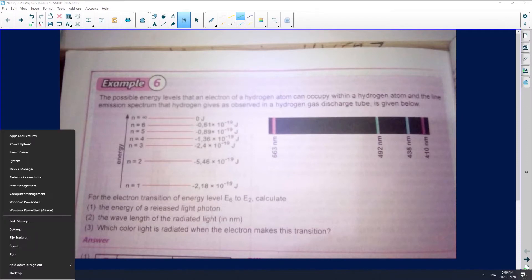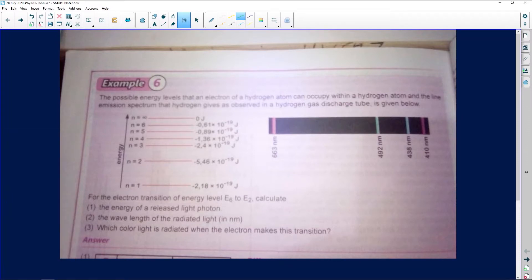The question says: the possible energy levels that an electron of a hydrogen atom can occupy within a hydrogen atom and the line emission spectrum that hydrogen gives as observed in the hydrogen gas discharge tube is given below. So this is the tube that they're talking about. Now remember, here they've given us a diagram. In this diagram, we have energy levels.